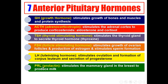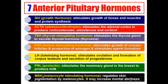Sixth is prolactin, which stimulates the mammary gland in the breast to produce milk. The seventh is melanocyte stimulating hormone (MSH), which regulates skin pigmentation by melanocytes and may increase mental alertness.